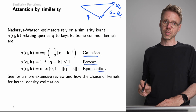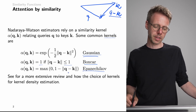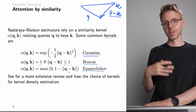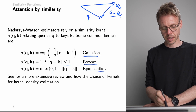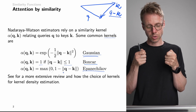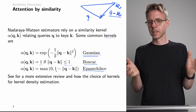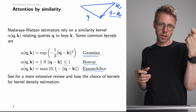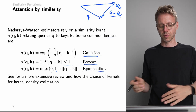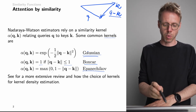Another kernel function is the max of zero and one minus the norm of the difference vector. That would also be zero if the norm of this vector is large, because then the expression goes negative and the maximum is zero. And for the difference between these two vectors being small, this goes to one. So these are three different functions that assign a value of one for similar queries and keys, and zero for queries and keys that are far apart.